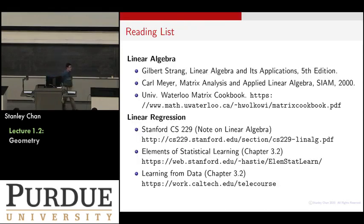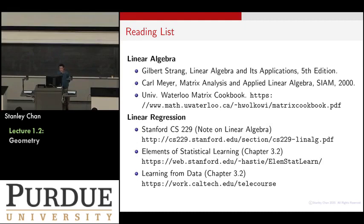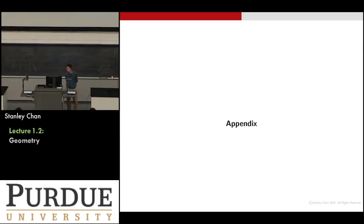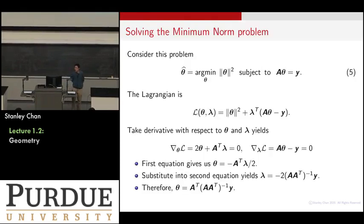Here is the reading list for today's lecture. It is a very quick tutorial covering typical notions of linear regression. I encourage you to look at some classic textbooks on linear algebra, a couple of relevant chapters, and the well-written Stanford CS 229 tutorial. You're also welcome to look at the tutorial for our own course. There will be an appendix in these slides showing how to solve the minimum norm problem using Lagrangians.